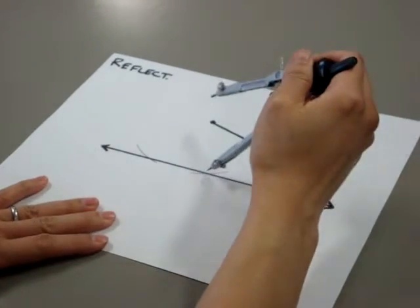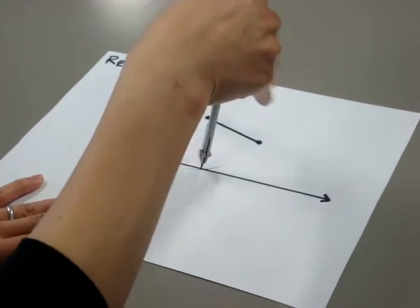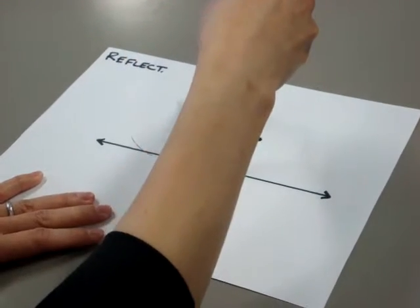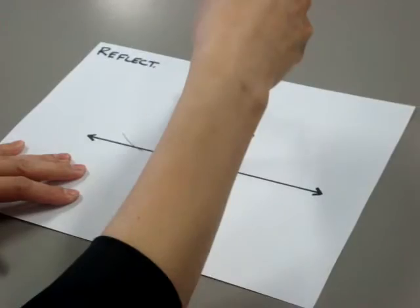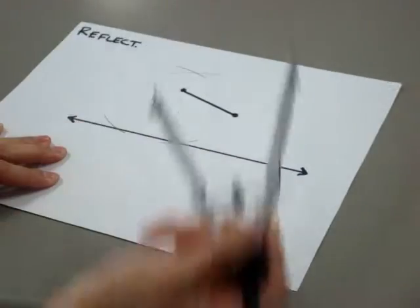I'm going to place my compass point at both intersections, open it up so that it goes beyond the point, and make an x on top.